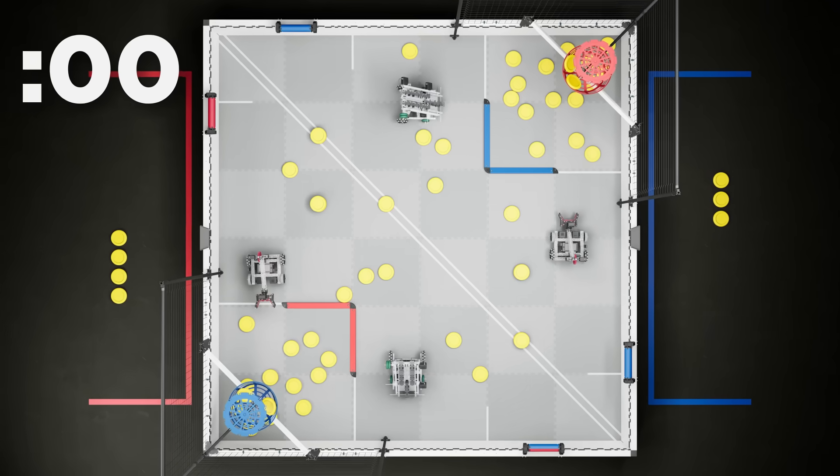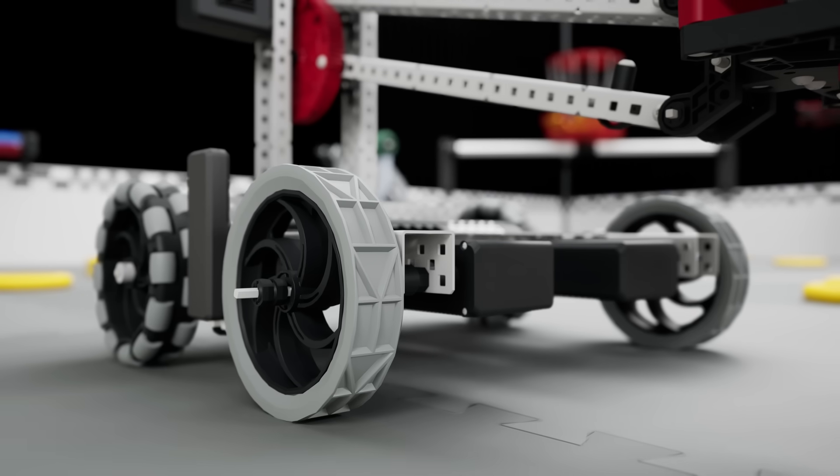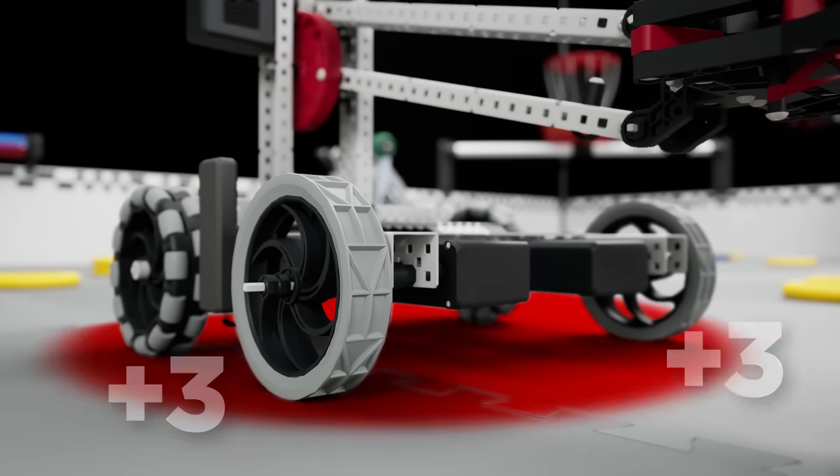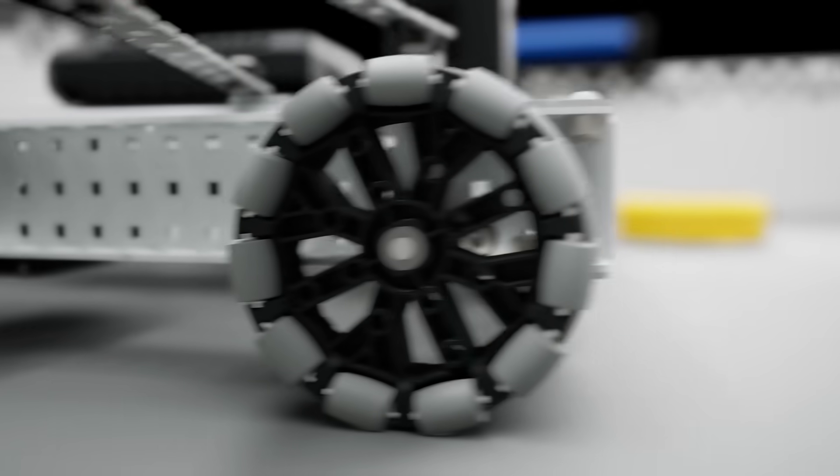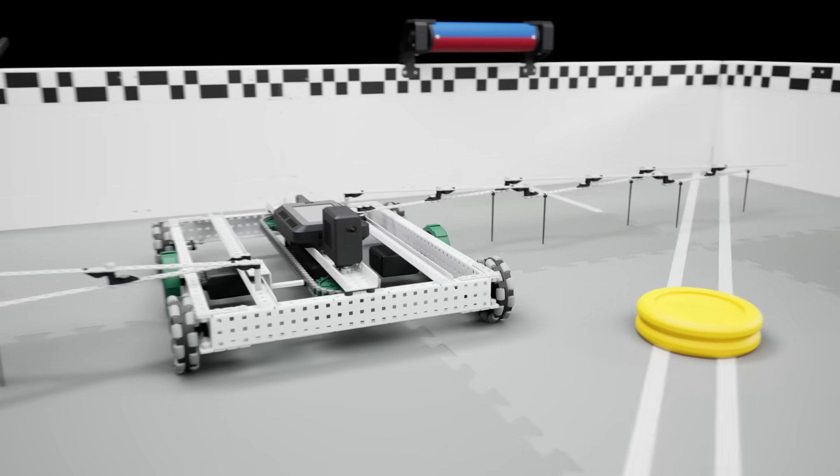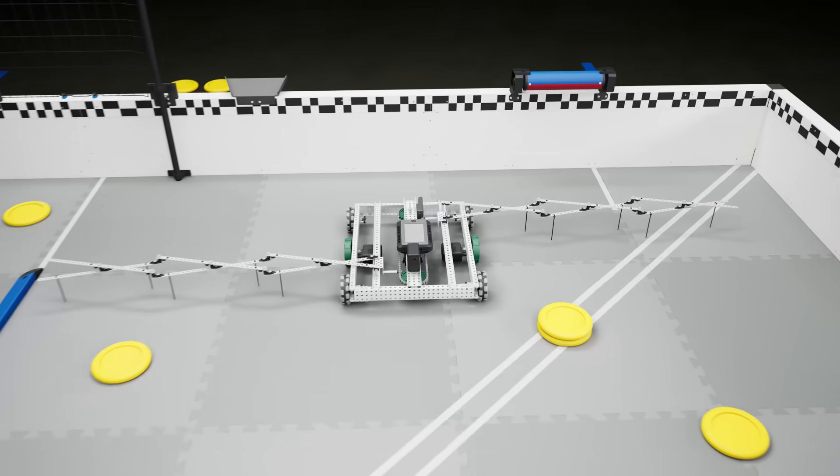As the clock winds down, it's time for the end game. At the end of the match, alliances will receive a three-point bonus for each tile their robots are covering. So, during the last 10 seconds of the match, there are no horizontal expansion limits.